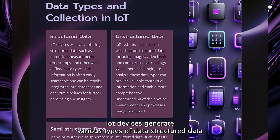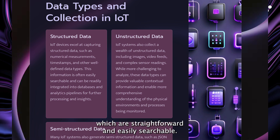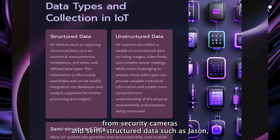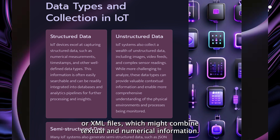IoT devices generate various types of data. Structured data, like temperature readings taken at regular intervals, is straightforward and easily searchable. Unstructured data includes complex forms like images and video feeds from security cameras. And semi-structured data, such as JSON or XML files, might combine textual and numerical information.